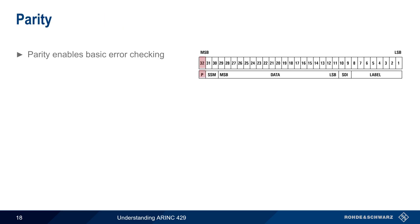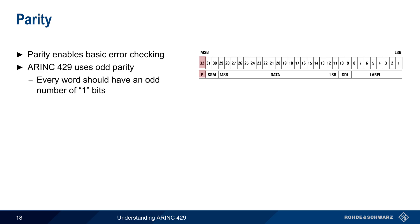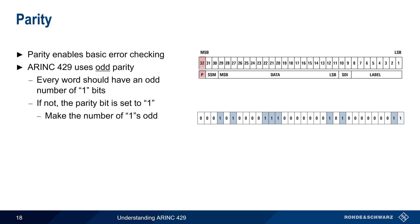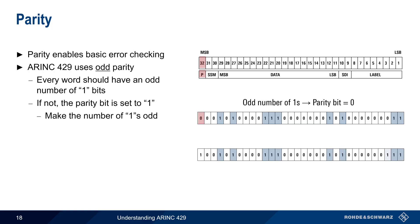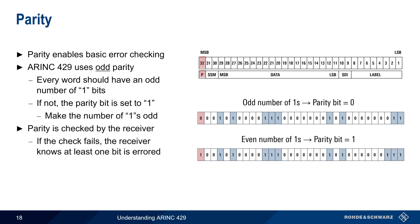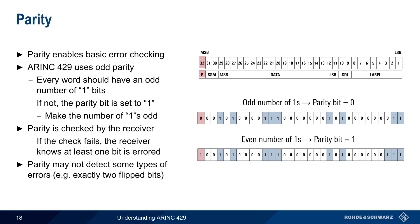The last field is the parity bit, which enables basic error checking. ARINC 429 uses odd parity, meaning that every 32-bit word should have an odd number of ones. If not, the parity bit is set to 1 in order to make the total number of ones be odd. For example, a word that already has an odd number of ones has its parity bit left at 0, but a word with an even number of ones has its parity bit set to 1. Parity is checked by the receiver, and if the check fails, the receiver knows that at least 1 bit is errored. Keep in mind that parity can only detect single bit errors, and some types of errors, such as 2 flipped bits, cannot be detected.